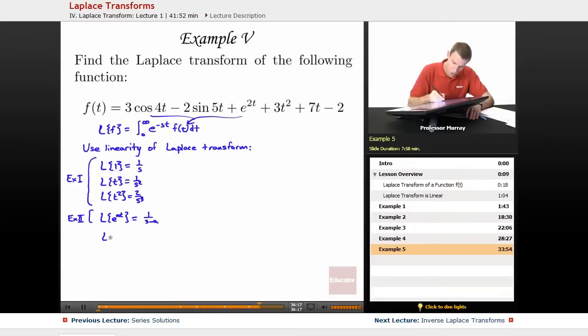L of cosine of at, we worked that one out in example 3, and that was s over a squared plus s squared.